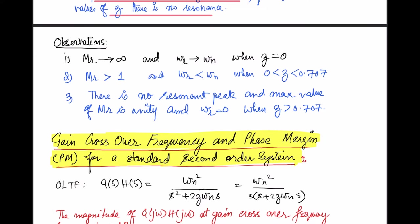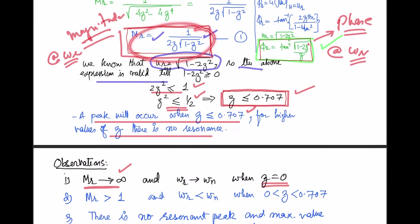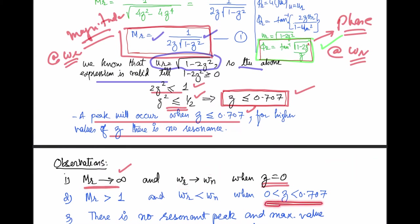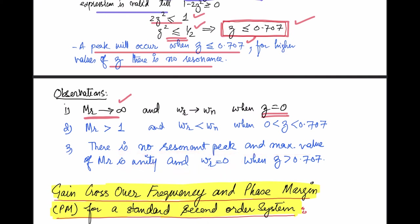Looking at different values of ζ: if ζ = 0, then Mr is infinite and ωr equals ωn. If ζ is between 0 and 0.707, then Mr > 1 and the resonant frequency is less than the natural frequency. If ζ > 0.707, there is no resonant peak, the maximum value of Mr is unity, and ωr is zero.